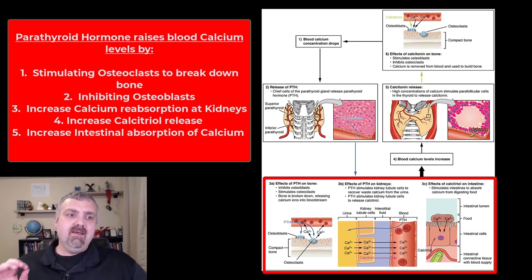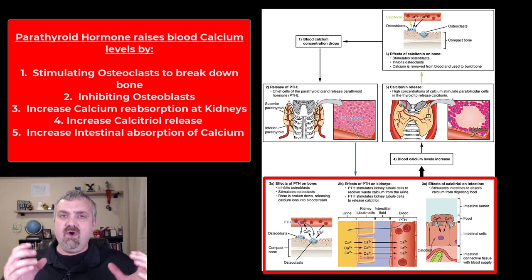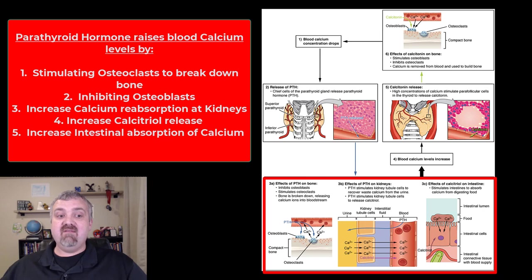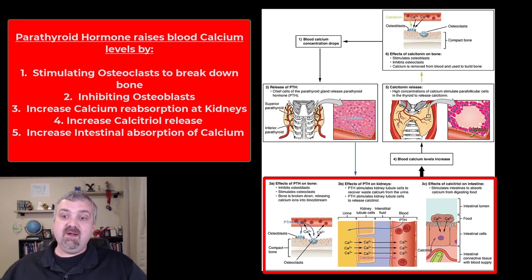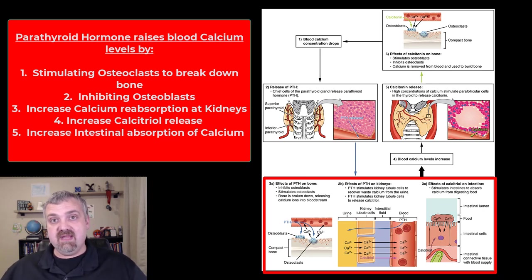The other thing that parathyroid hormone is going to do is tell the kidneys to release calcitriol. Calcitriol is the hormone that converts vitamin D3 into its active form, so you're going to have more vitamin D. And then for the effects on the intestines, it's going to increase the absorption of calcium, so you get more calcium coming into your body.